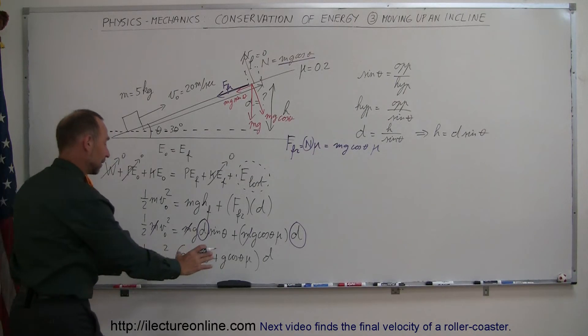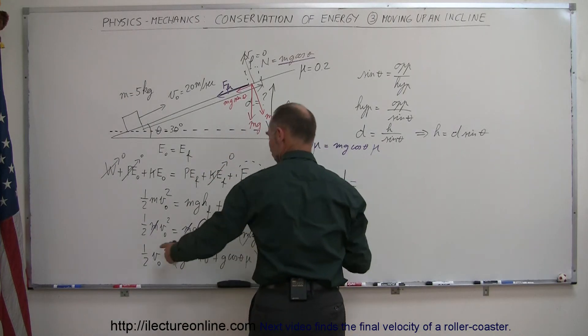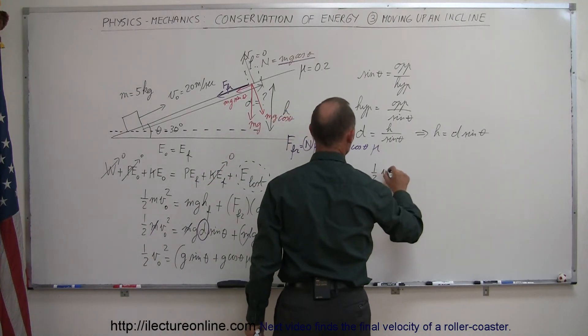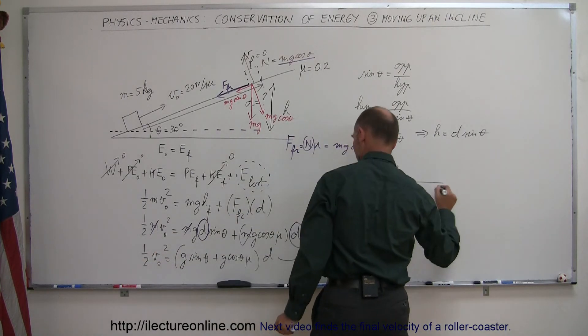Then I divide both sides by this quantity, flip the equation around, so now I can say that the distance traveled is equal to 1/2 V initial squared, which is the left side equation, divided by this whole thing right here, so divided by.